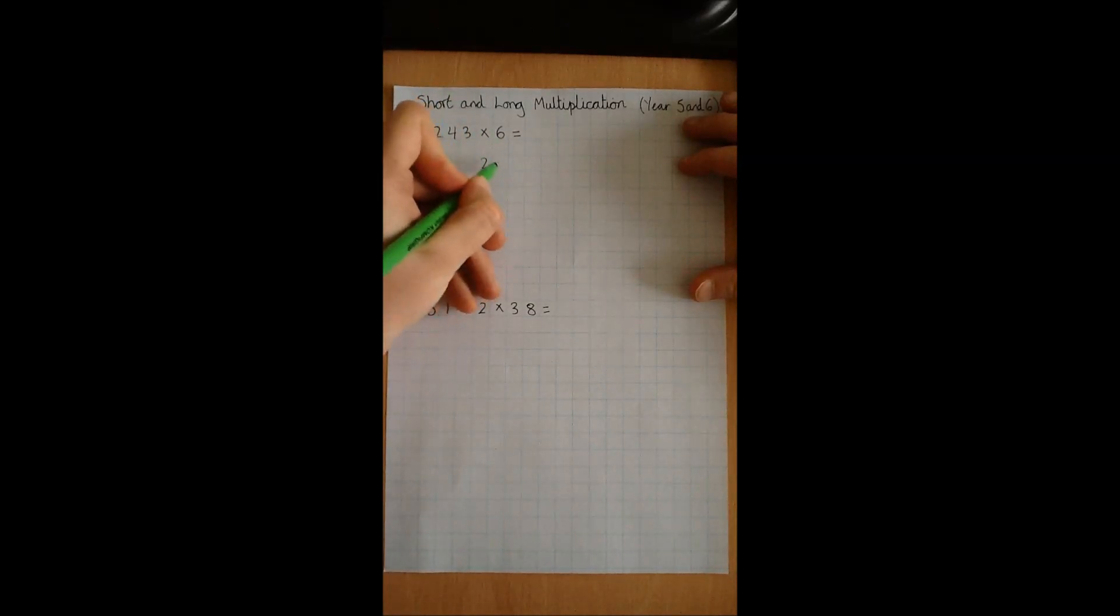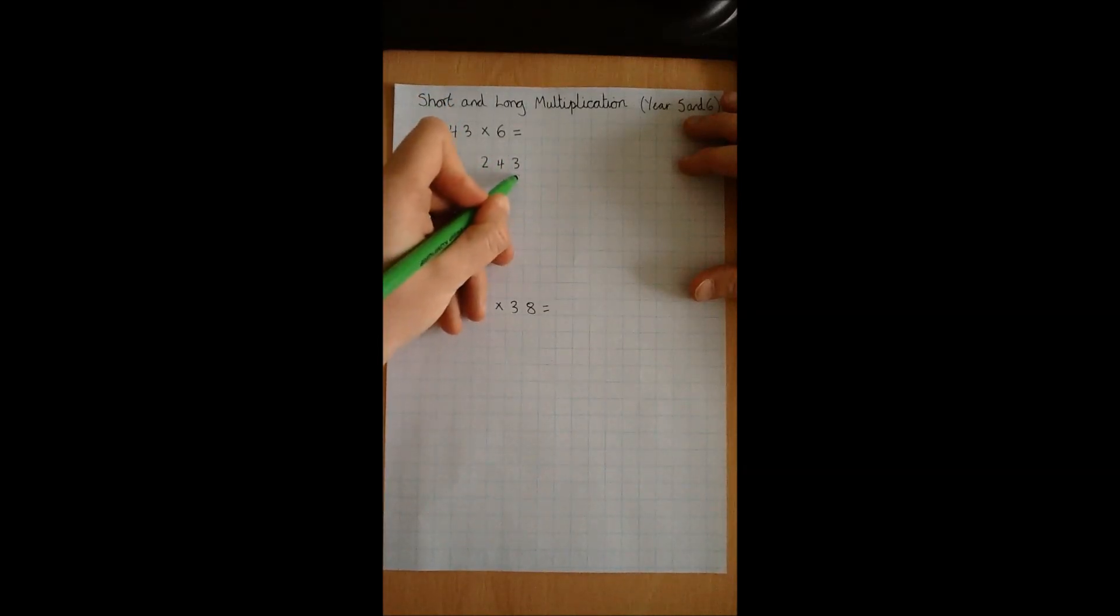So 243 multiplied by 6. We've got a 6 and a 3 both in the ones column. Then we would take it a step at a time. So 6 multiplied by 3, which we know is 18.